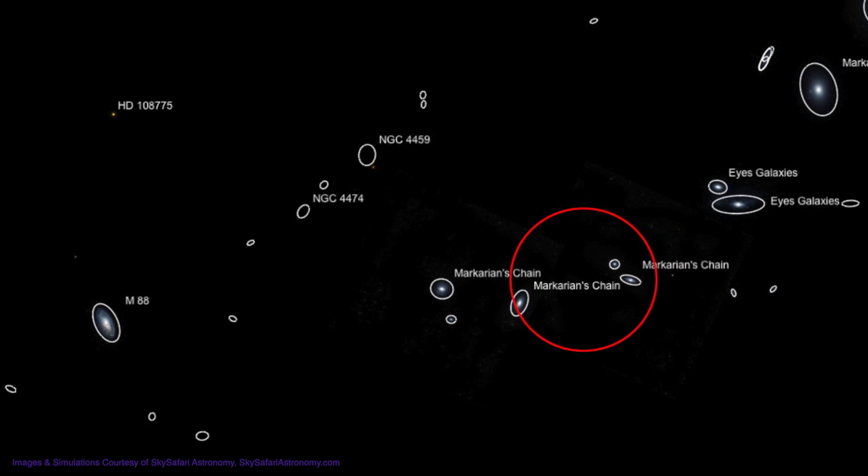Next, move about a half degree again to the lower left, and you'll see 10th magnitude NGC 4473, another elliptical galaxy, so it'll also appear generally round in shape.